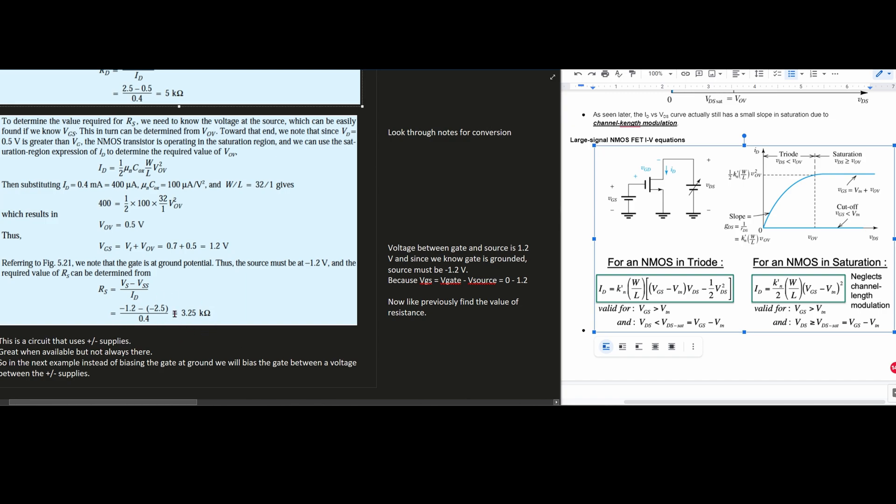Now this is a circuit that uses plus minus supplies. This is great when available but not always there. So in the next example, linked below the like button in the description, instead of biasing the gate at ground, we're going to bias the gate between a voltage and between the plus minus supplies.